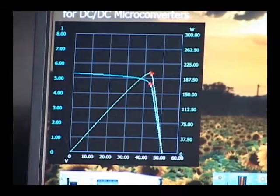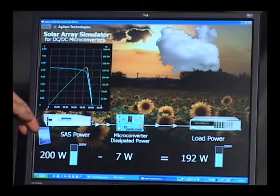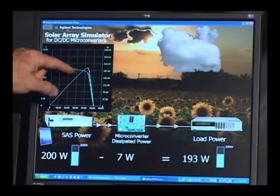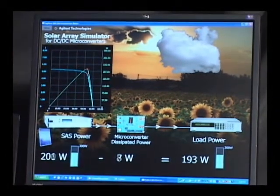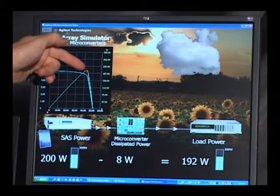The IV curve is being simulated by the solar array simulator, simulating what would come out of a real solar panel. So it's the job of that DC to DC optimizer to keep that operating point right at that peak of the green curve.